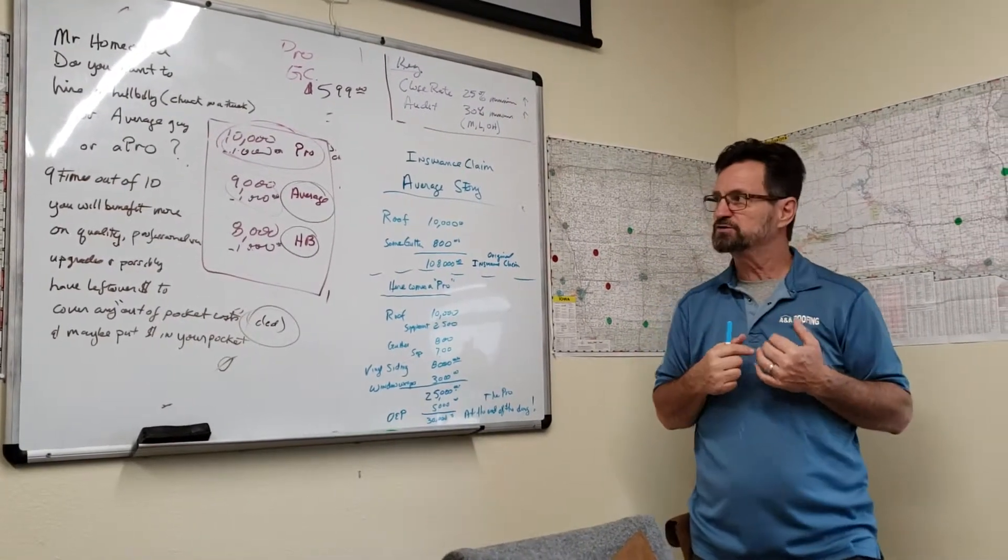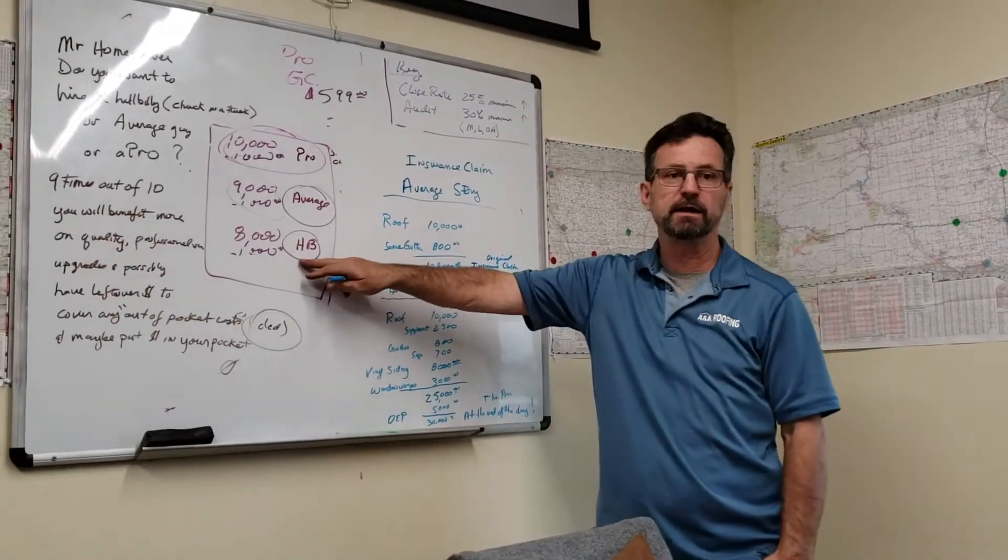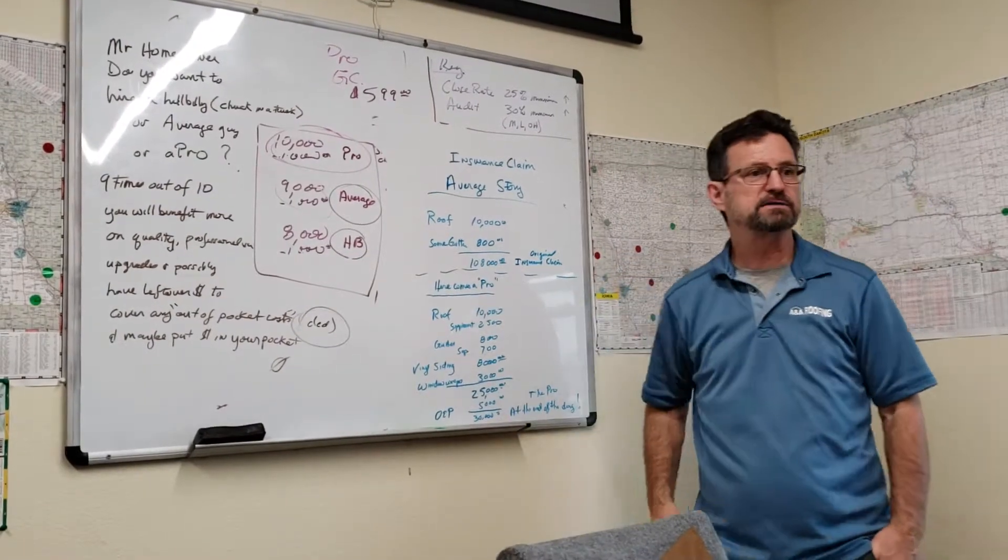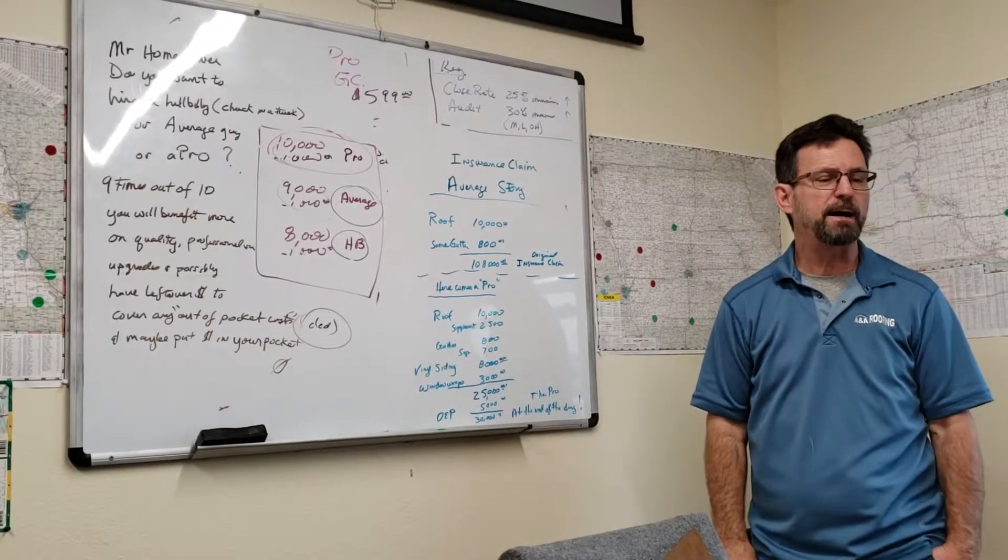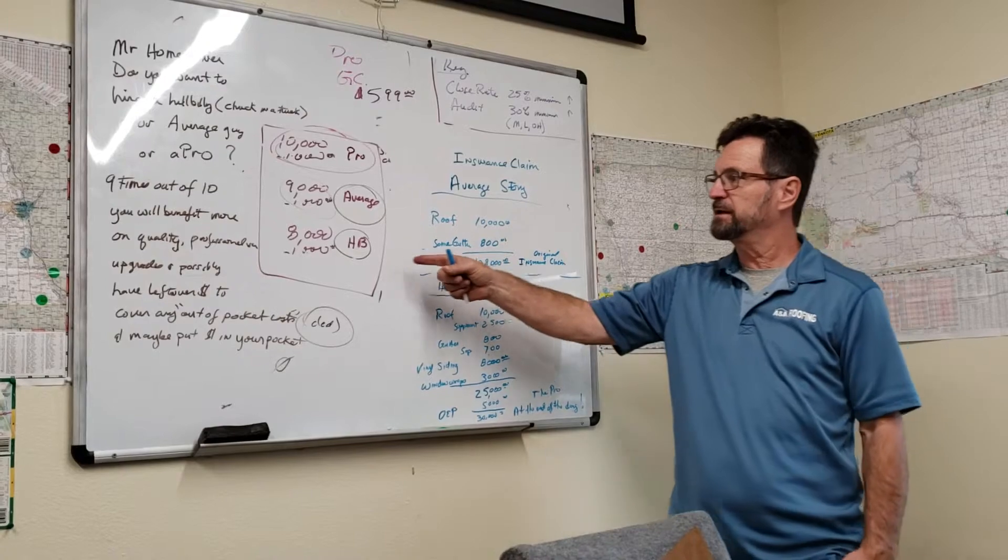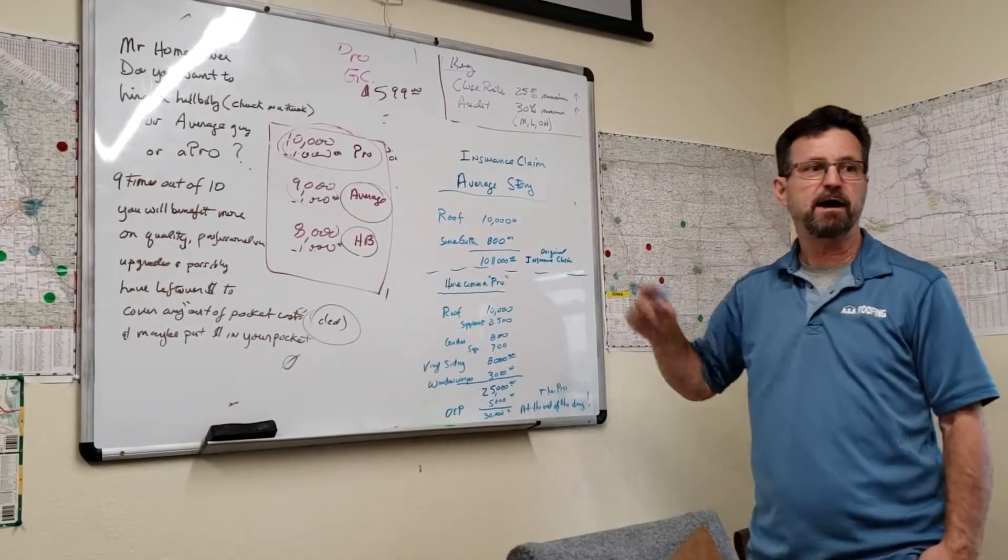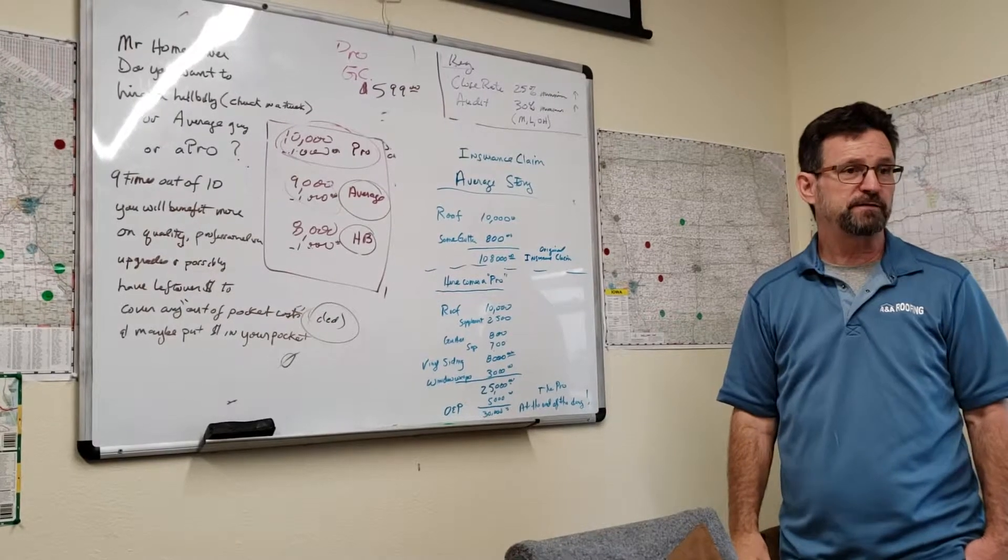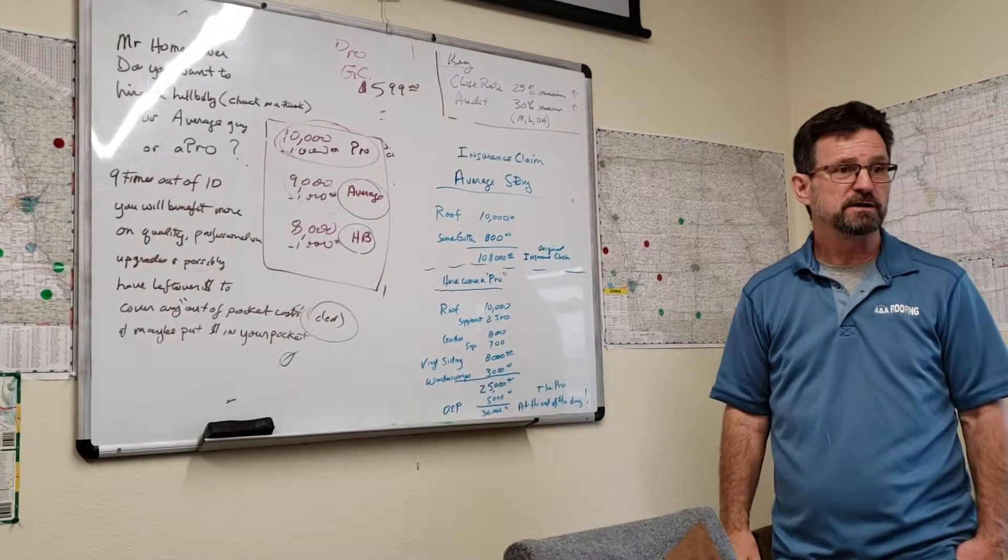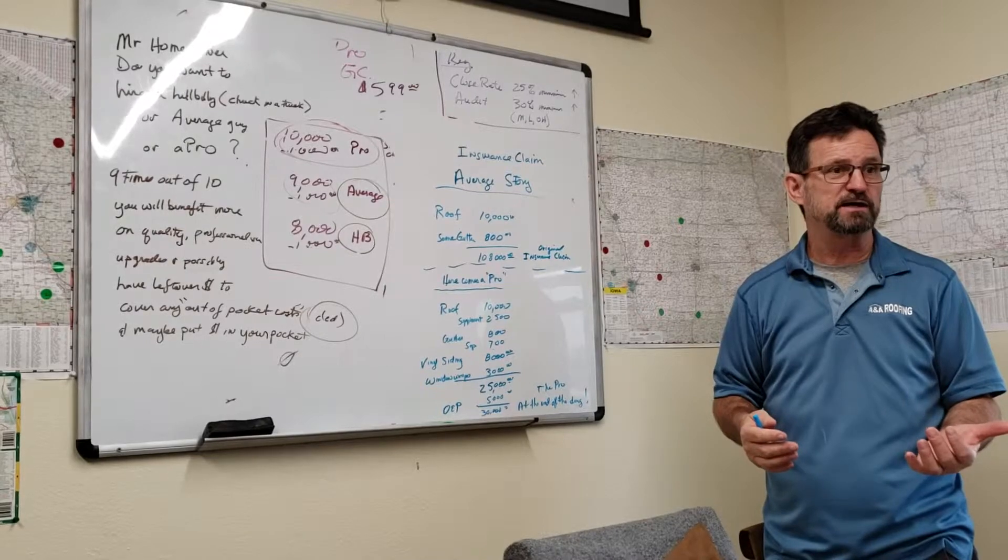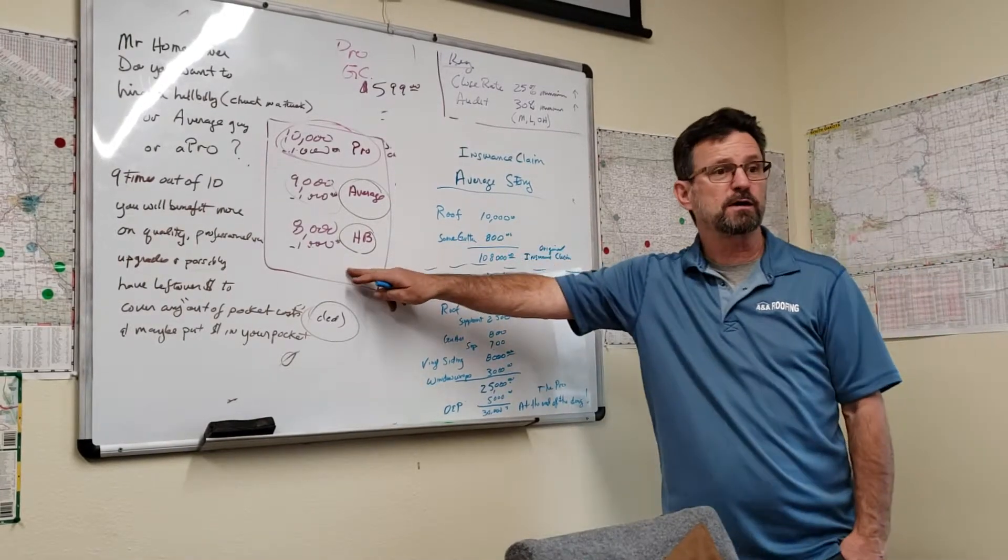Guess what? Most homeowners go out and hire a hillbilly to do that work for $8,000. What happens? The insurance company gets the final bill. It was less than their amount, so they back off the depreciation. In other words, you still pay your $1,000 deductible, but now you get inferior work.